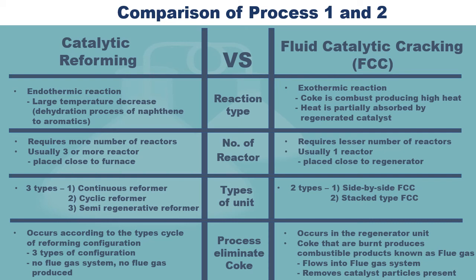The process of eliminating coke for the two systems differs. The catalytic reforming system eliminates coke according to the type of reforming configuration, and the three configurations affect the method of removing coke. There is no flue gas produced in the catalytic reforming system. The process of eliminating coke for the FCC occurs in the regenerator unit, where coke is burned to produce combustible products known as flue gas. These gases will then move to the flue gas system.